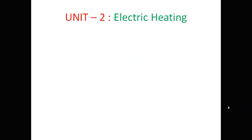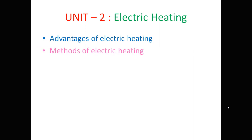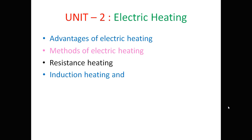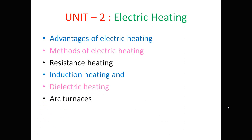The second unit is Electric Heating. Under electrical heating, we will cover the advantages of electric heating, methods of electric heating, resistance heating, induction heating and dielectric heating, arc furnace, direct arc furnace and indirect arc furnace. These are the topics we are going to study under the heading Electric Heating.